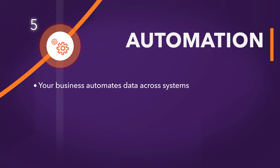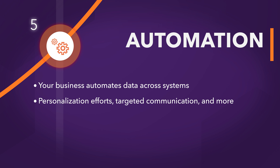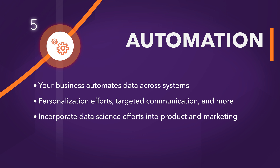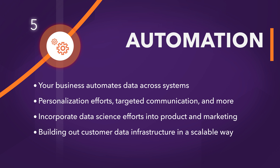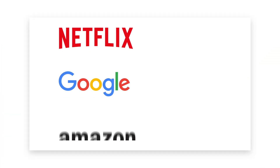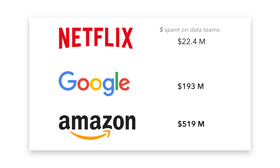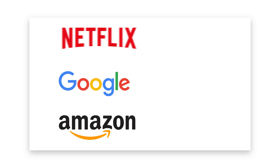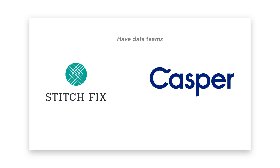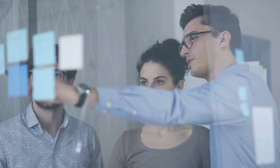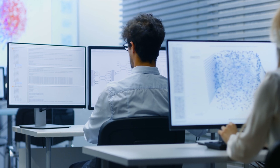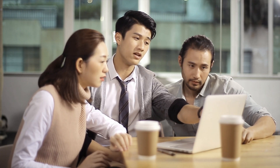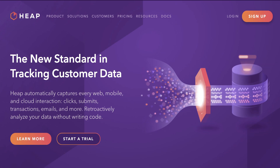This level requires that companies automate data across their systems to power personalization efforts, targeted communication, and more. This is where companies look to incorporate data science efforts into their product and marketing strategies, and build out their customer data infrastructure in a scalable and powerful way. Leading companies like Netflix and Google have deeply invested in the core data infrastructure required to create a unified customer view. But this strategy is no longer just for larger organizations — recent technology changes in cloud compute and storage economics have made this available to a broader set of companies, even with smaller data teams. To optimize their bottom line, best-in-class companies develop a full picture of the customer in order to deeply understand online and in-app behaviors, and how they fit into the broader customer experience.